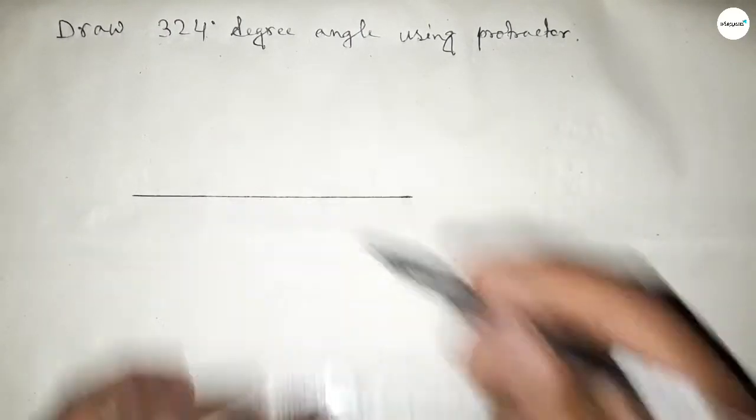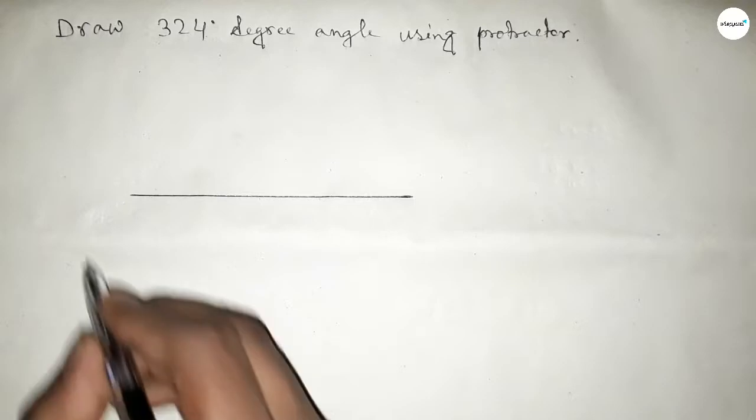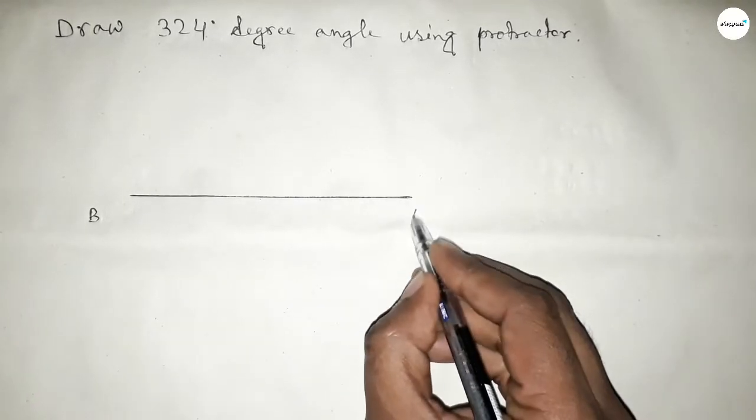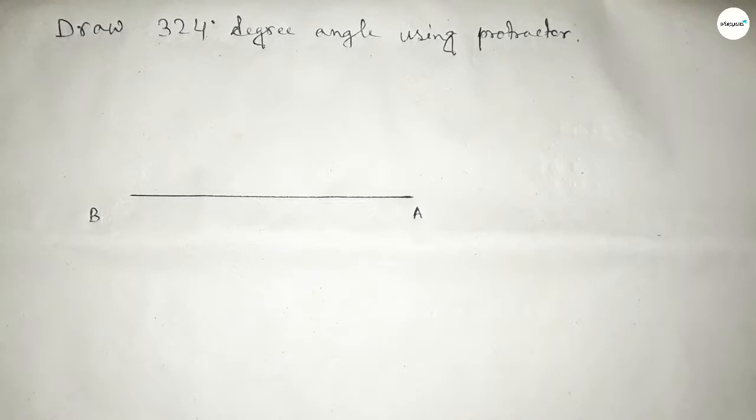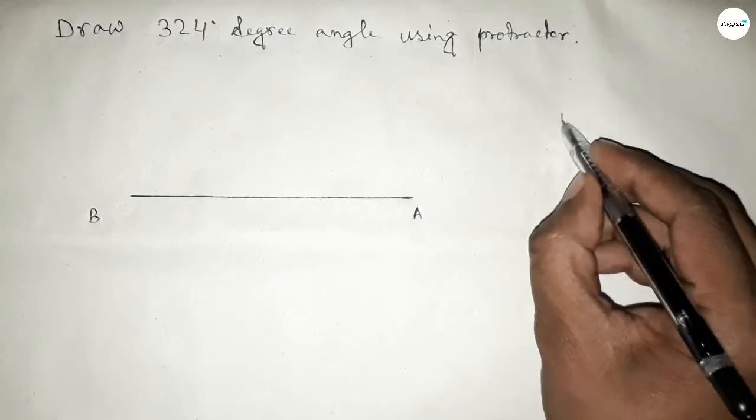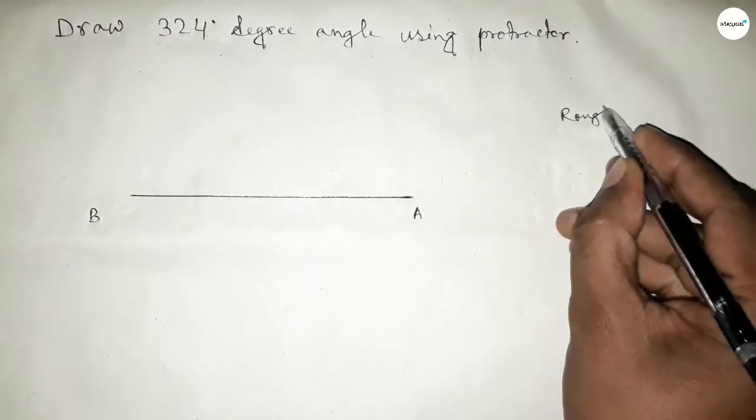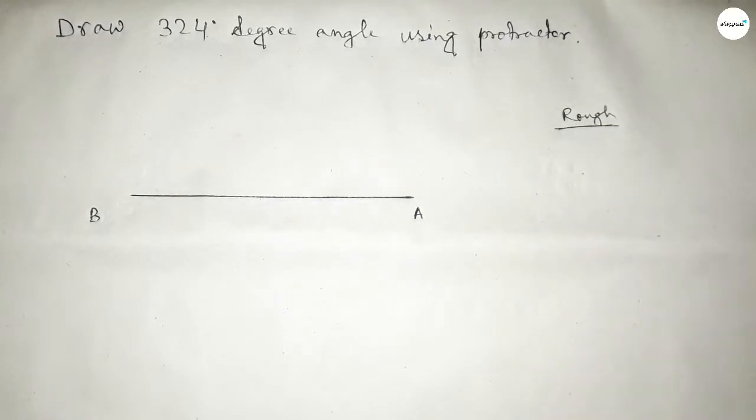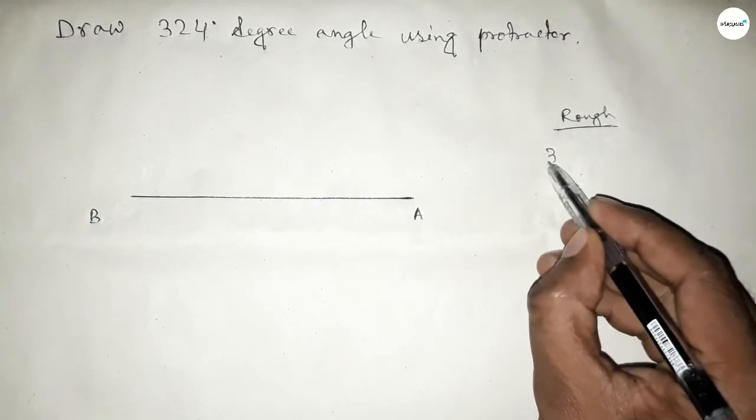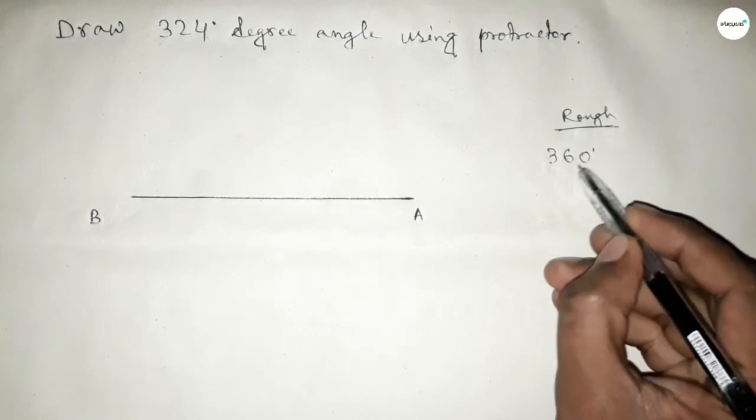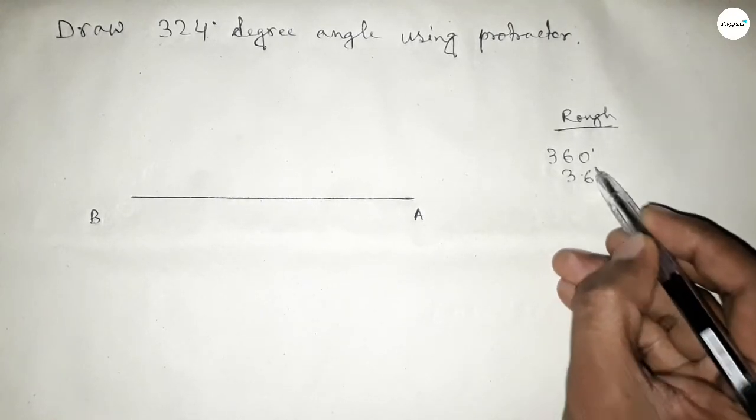Next, mark point B here and point A here. Now let's discuss some important calculations. If we subtract 36 degrees from 360 degrees, then we can get a 324-degree angle.